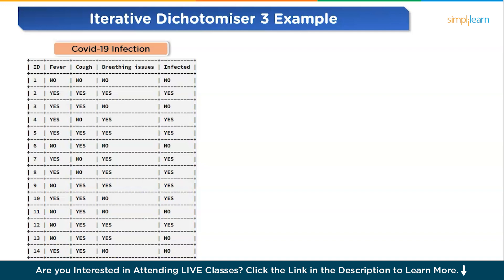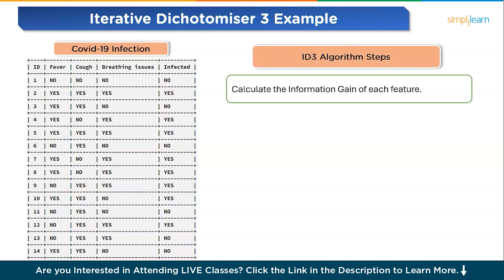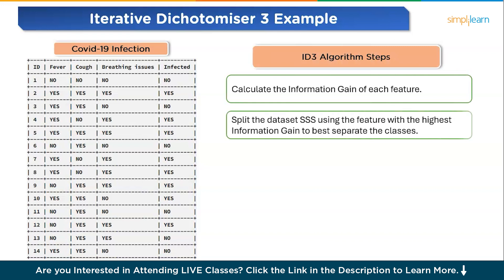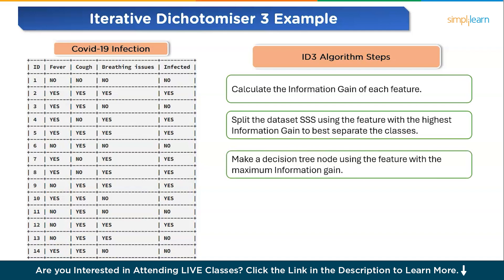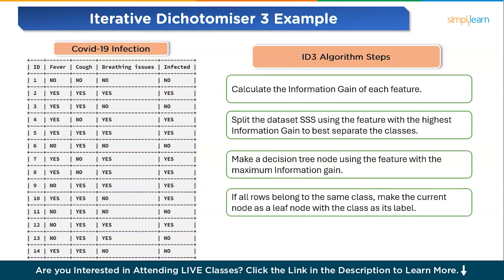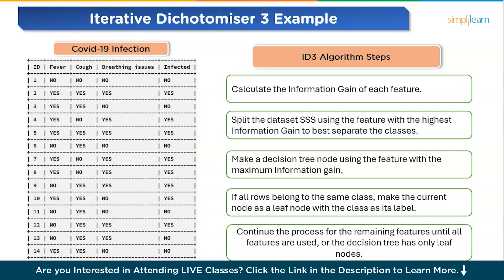What are the steps for the ID3 algorithm? Step 1: calculate the information gain of each feature. Step 2: considering that not all rows belong to the same class, split the dataset S into subsets using the feature for which information gain is highest. Step 3: make a decision tree node using the feature with the maximum information gain. Step 4: if all rows belong to the same class, make the current node a leaf node with the class as its label. Step 5: repeat for the remaining features until we run out of features or the decision tree has all leaf nodes.